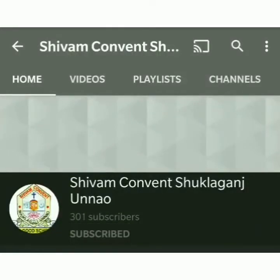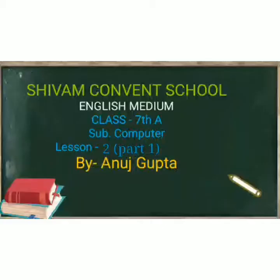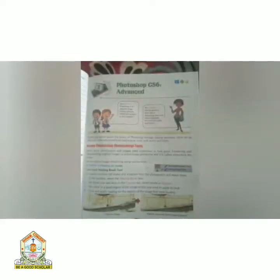Good morning. Today I will start the second chapter of Computer Photoshop CS6 Advanced. In the last chapter you learned the basics of Photoshop. In this chapter you will learn advanced tools in Photoshop CS6. The first topic is image processing or retouching. Many times a photo or image needs correction to look good — enhancing or manipulating an original image is called retouching.